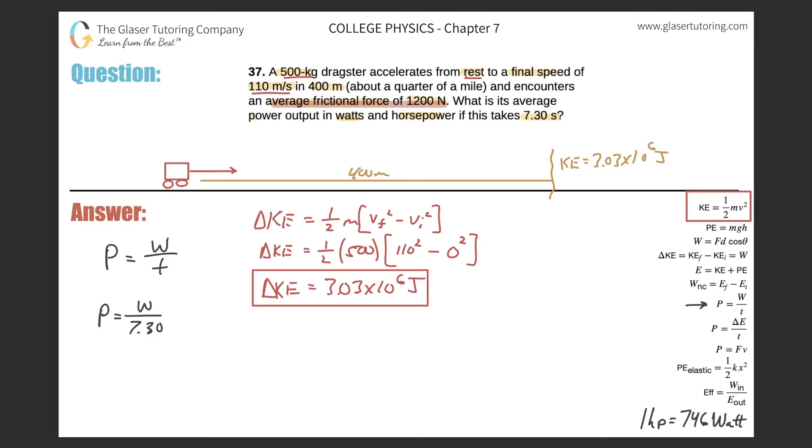How do I find the energy then that the dragster produced to overcome just the friction? Let's see what we're given in terms of friction. They tell us that the average frictional force was going to be 1200 newtons. And they also told us how long that this dragster was driving for. So it's encountering this force of 1200 newtons over 400 meters. So they also gave me a distance of 400 meters.